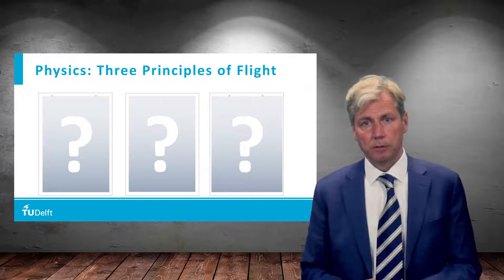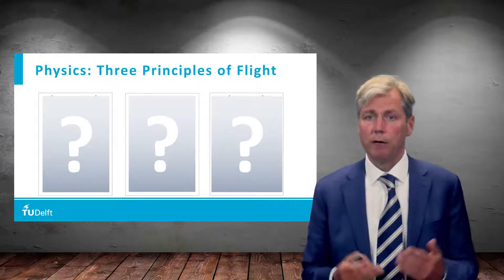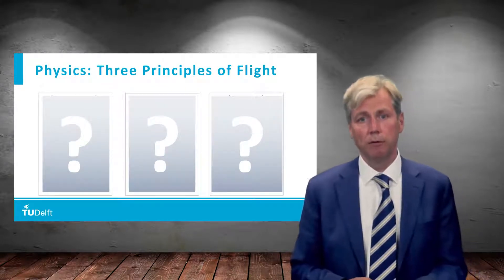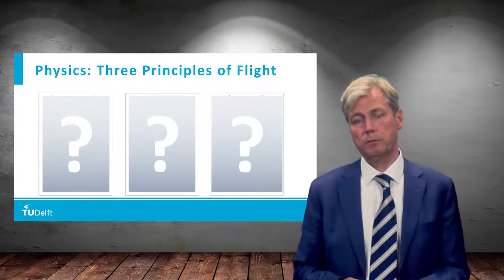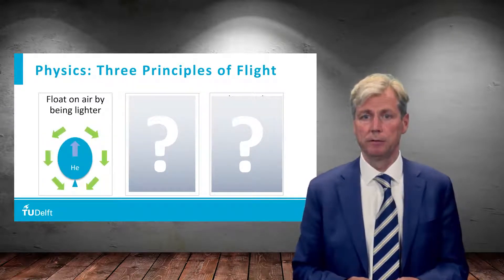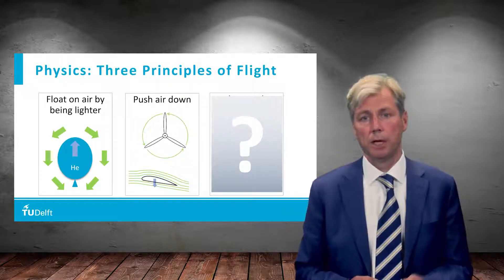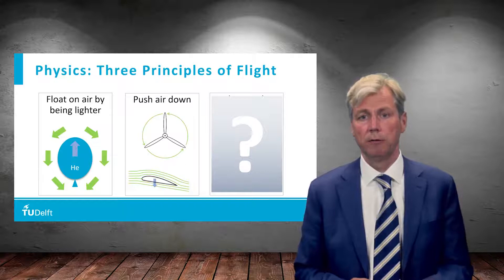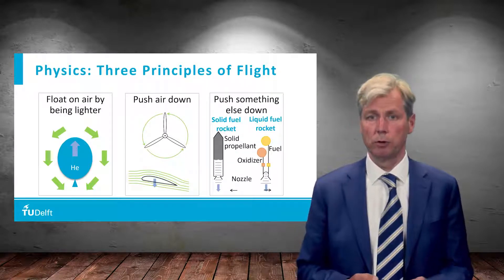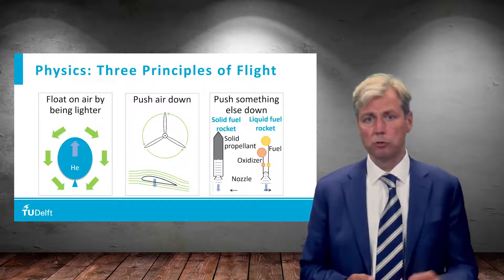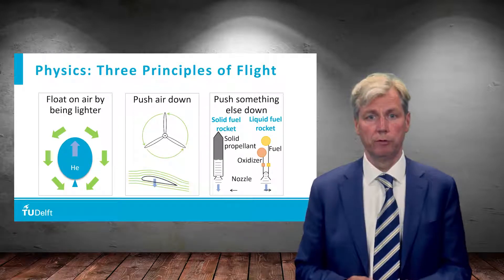How do we do this? What is the trick? The secret of flight. Well, if you look at the physical principle, there are actually three different principles. The first one is being lighter than air. The second is pushing air downwards, action is reaction, and the third is pushing something else downwards like with the rockets. And this is also roughly the historical order in which we learned to fly.